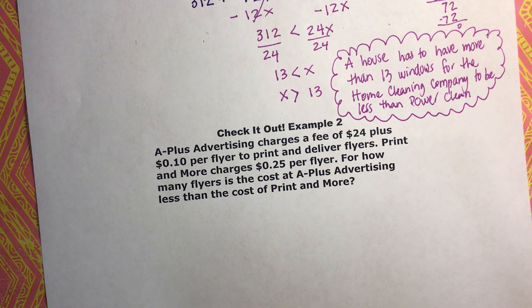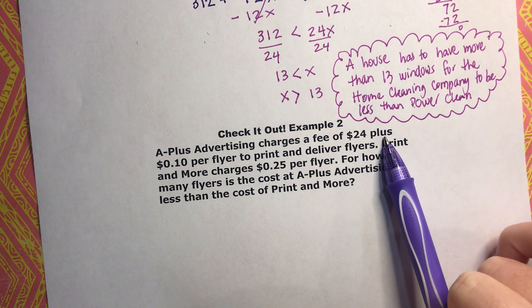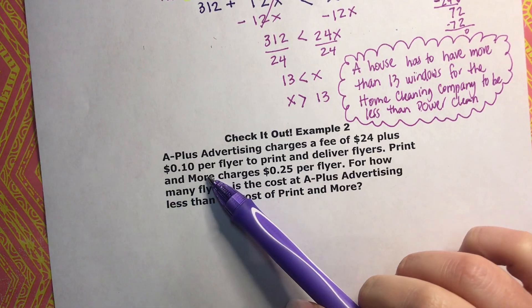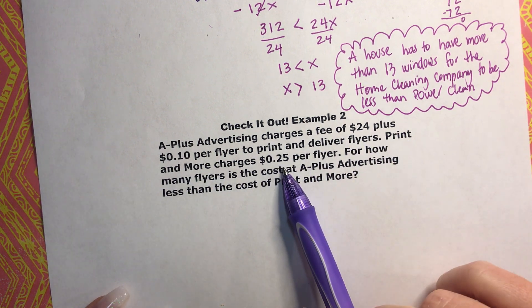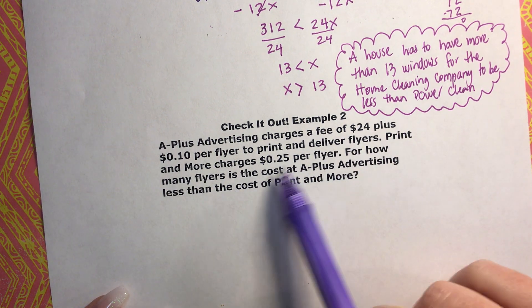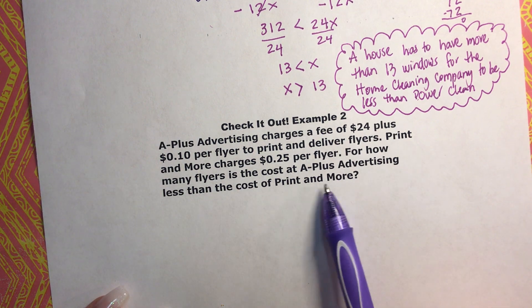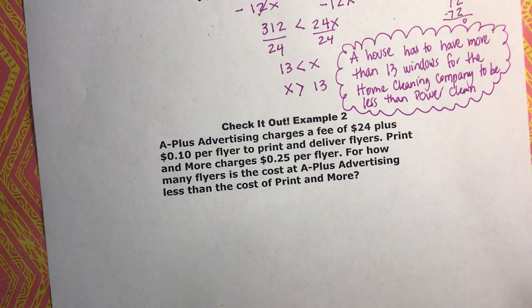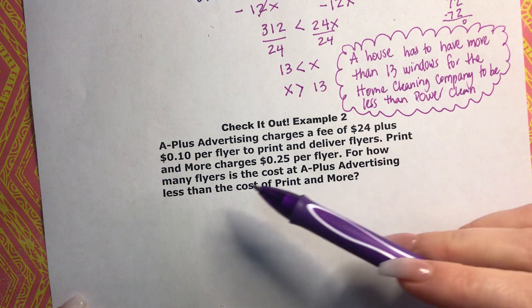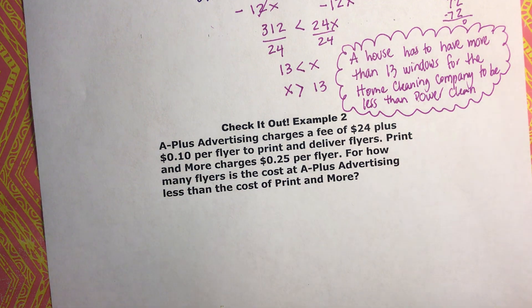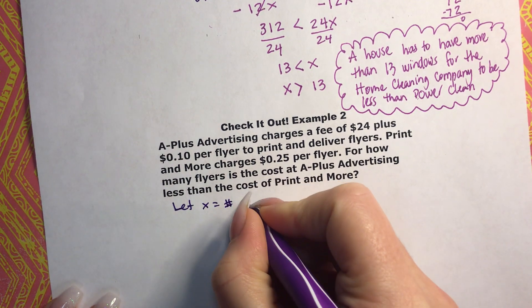Example two also has a second part. A Plus Advertising charges a fee of $24 plus 10 cents per flyer to print and deliver flyers. Print and More charges 25 cents per flyer. For how many flyers is the cost at A Plus Advertising less than the cost at Print and More? Just like the last one, we need to define the variable first. For how many flyers — that's what we're figuring out. Let X equal the number of flyers.